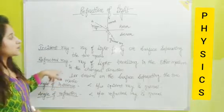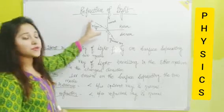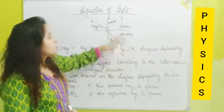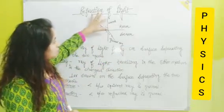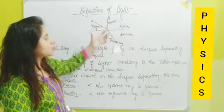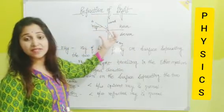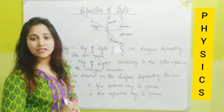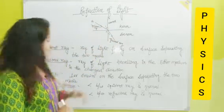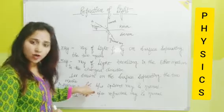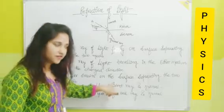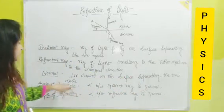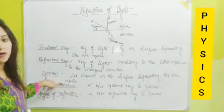What is Normal? When a ray is incident and bends, there is a line perpendicular to the given surface. The perpendicular drawn on the surface separating the two media is known as Normal.